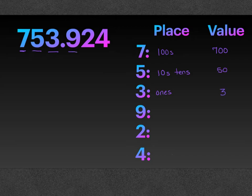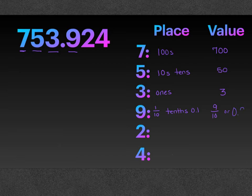Now moving over to the decimal, we have a nine, and this is a nine in the tenths place. So we can write that in fraction, word, or standard form. And because it is a nine in the tenths place, it has a value of nine tenths, or as a decimal, nine tenths. The two is in the hundredths place, so it has a value of two hundredths, or as a decimal, two hundredths.